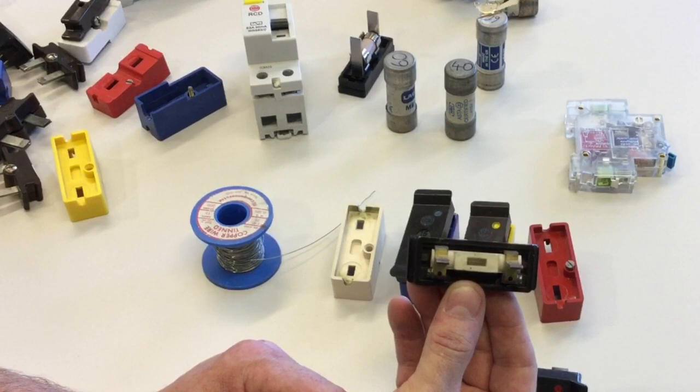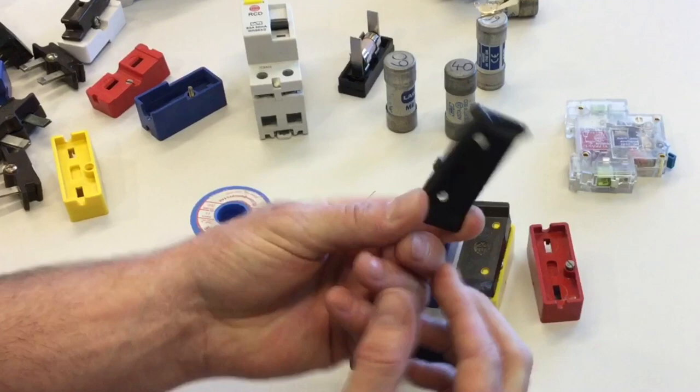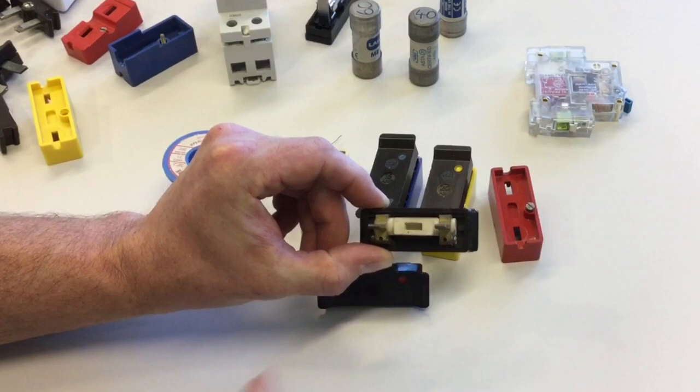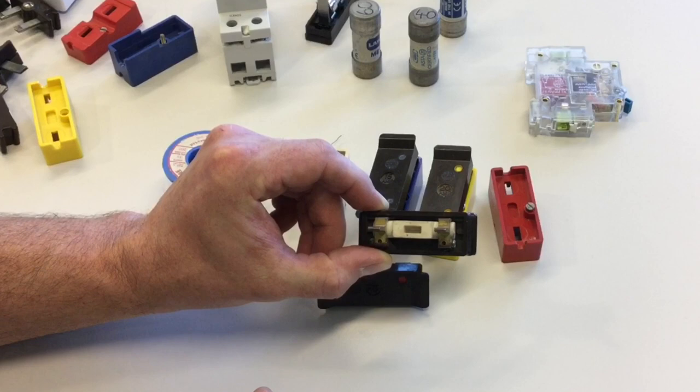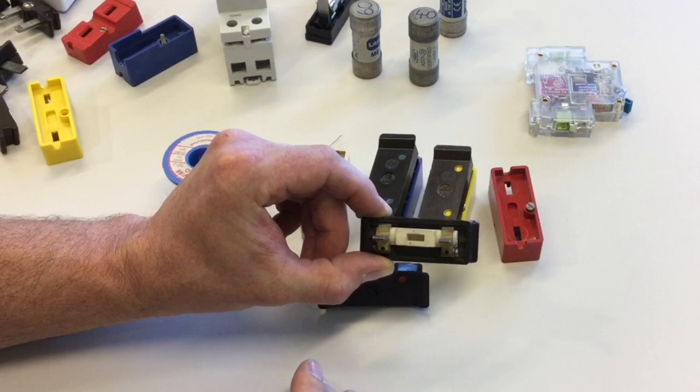Some other considerations for a rewireable fuse is the fact that the fuse element is open to the air, therefore liable to deteriorate. Also because it's not enclosed completely, the fuse element itself is going to get very hot. Because some of the heat can escape, that means it's not the most precise device that you could get.